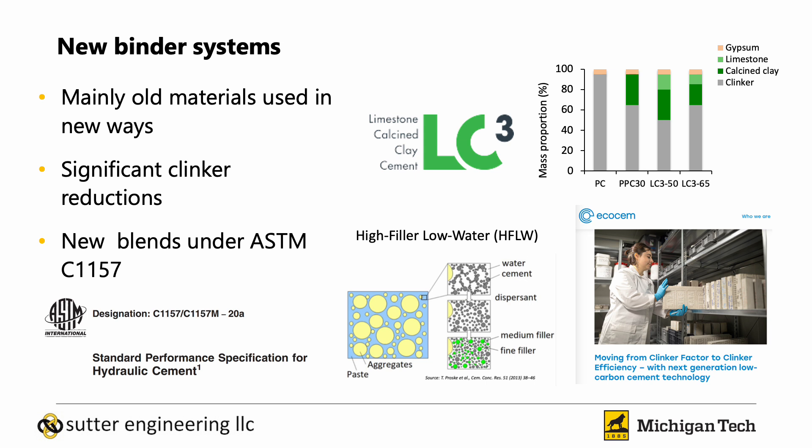New binder systems often take existing familiar materials — such as clinker, calcined clay, and limestone — and blend them together. One very commonly known example is LC3. There are other types of new systems emerging as well, such as high filler, low water blends, which we'll see more of in the future. These represent new combinations of materials, not just a new individual material.